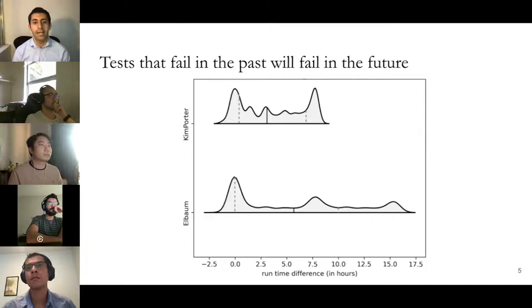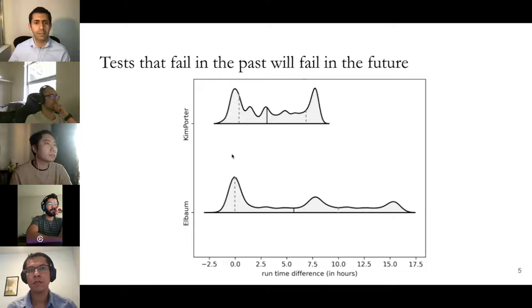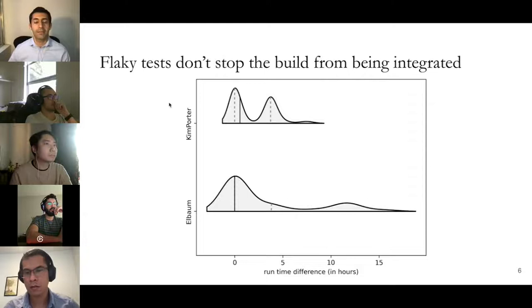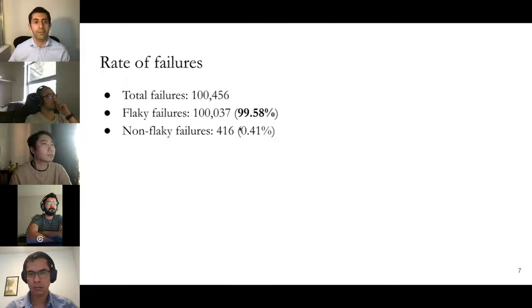If we consider flaky failures as true failures — as previous studies do — the HUMN-PARTER and ALBUM algorithms show the median gain of more than 2.5 hours for HUMN-PARTER and more than 5 hours for ALBUM. But when we consider that flaky tests do not stop the build and only look at true failures, the results deteriorate significantly — the median for ALBUM drops to zero and for HUMN-PARTER to half an hour.